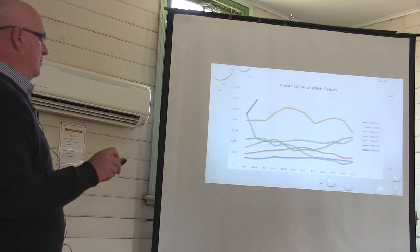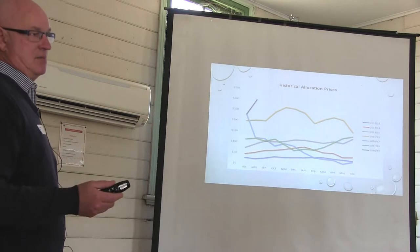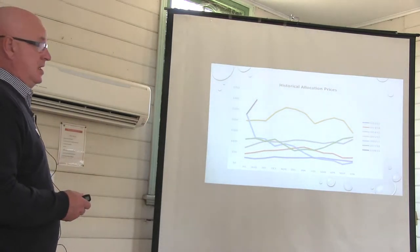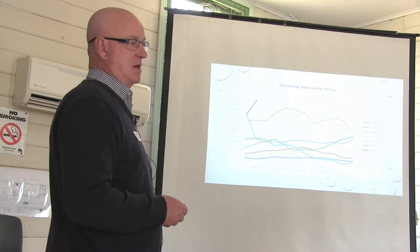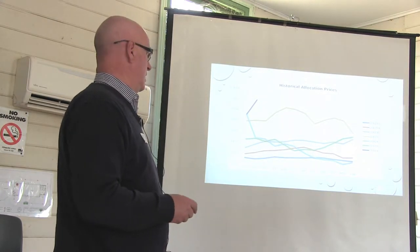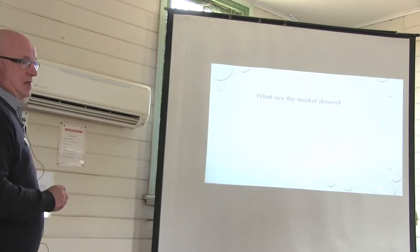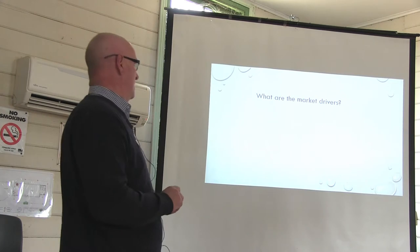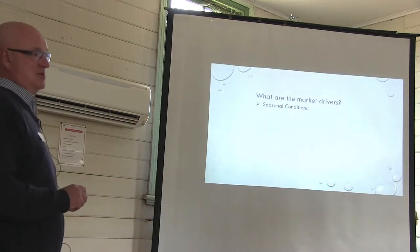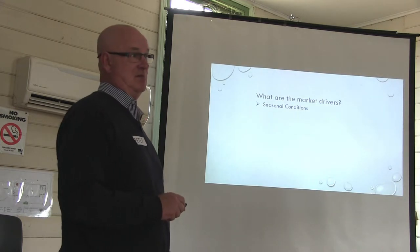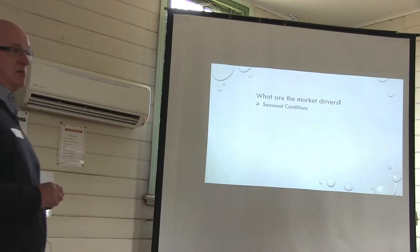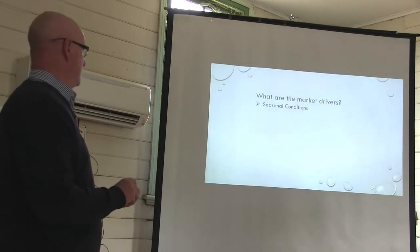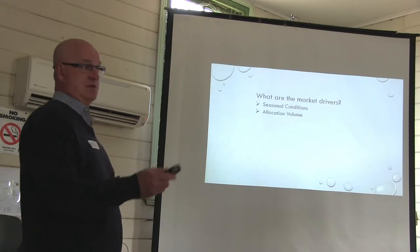There's certainly pressure in the market at the moment around price. Andrew touched on the inner valley trade - there's a disparity now between Goulburn prices and Murray prices, an average of about $20 a megalitre difference. So what are the drivers? Seasonal conditions - that's the dominant factor, having a 99.9% effect on price. We talk about a lot of other factors, but allocation volumes are themselves a result of seasonal conditions.